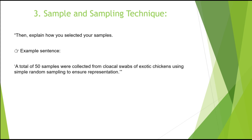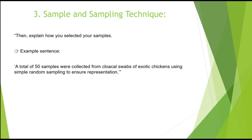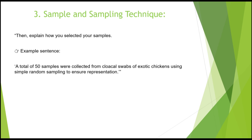Justification simply means the reason — why did you decide to go for this technique? Why did you decide to use this particular sampling technique to get your sample? For Chioma's topic, we're going to say: 'A total of 50 samples were collected from cloacal swabs of exotic chickens using simple random sampling to ensure representation.' The 50 is not the total population; it is the sample drawn from that population.